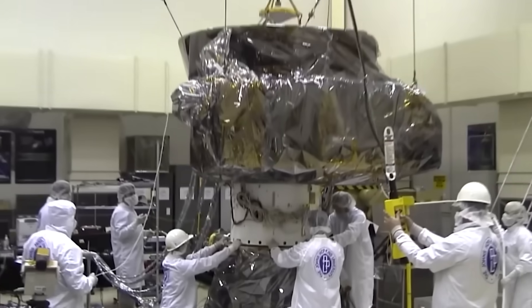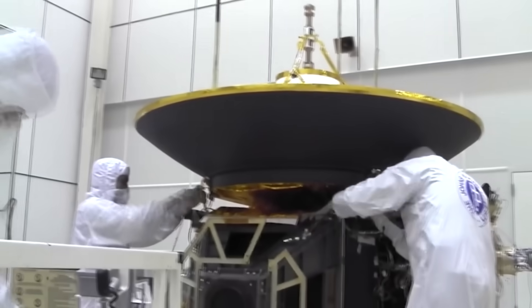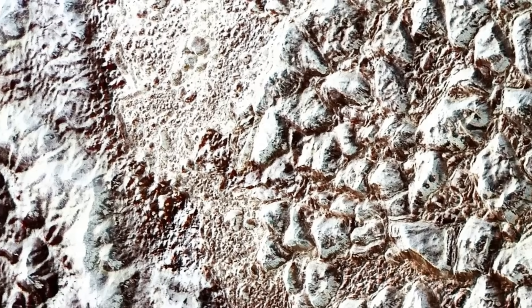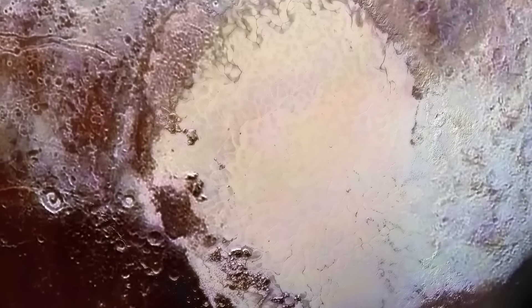Back in 2015, when New Horizons sent back its breathtaking images, scientists expected a barren world. Instead, they found towering mountains made of water ice and smooth plains of frozen nitrogen stretching for hundreds of kilometers.